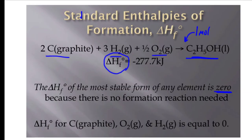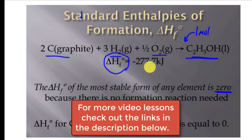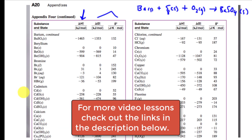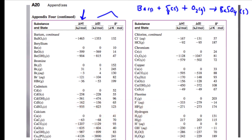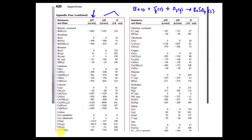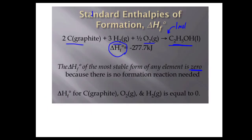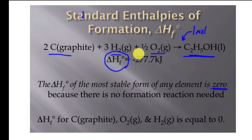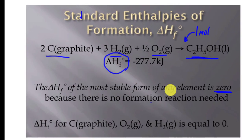I'll give you a copy of the chart in class, so don't worry about copying it down. The value of –277 for ethyl alcohol comes from looking it up in that chart. When we form that substance, the elements contributing to it each have a value of zero, and the compound's ΔHf value is what's given in the table. So that's where this number comes from — and now we'll look at what to do with these values.